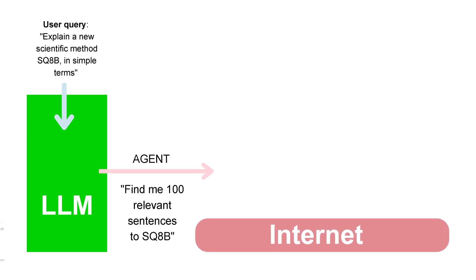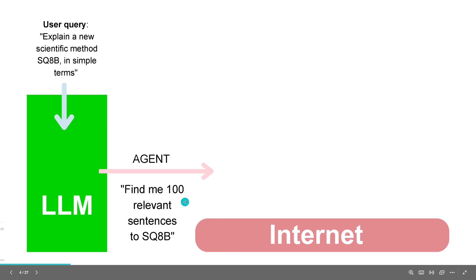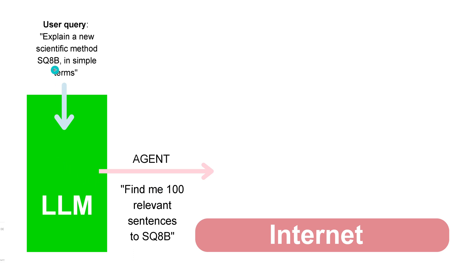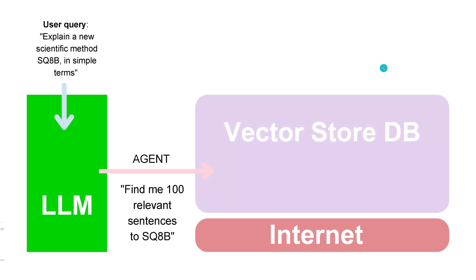It is easy. In a classical, old-fashioned way, you have an agent that connects the LLM to the internet. The LLM says, 'I have no inherent information about SQ8B,' so either you go to the internet and find 100 relevant sentences about this topic and feed those back so the LLM can give the user an answer — or, if you are a corporation, you say, 'I have my private data in a vector store, in a vector database within my corporation.' Let's focus on that.